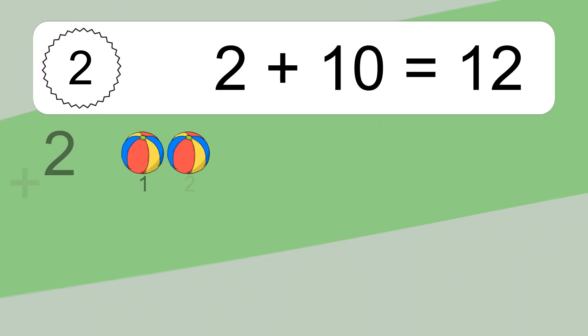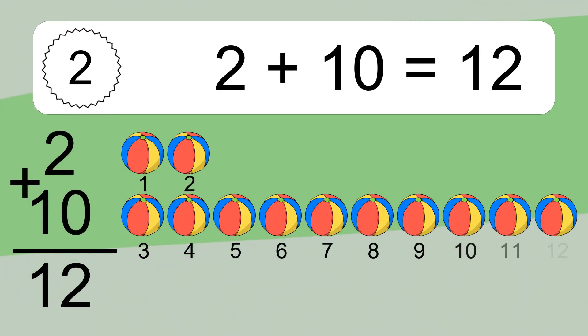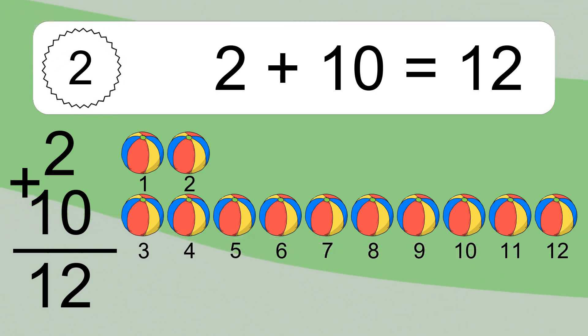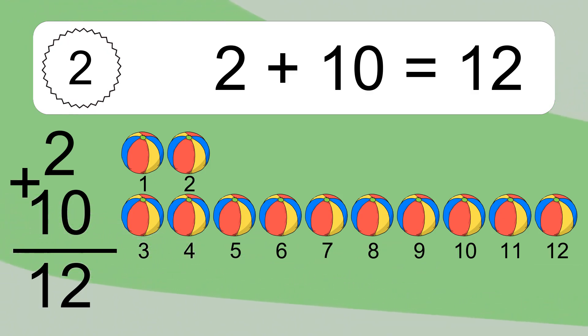2 plus 10 equals what? 2 plus 10 equals 12. Let's count it. 1, 2, 3, 4, 5, 6, 7, 8, 9, 10, 11, 12.